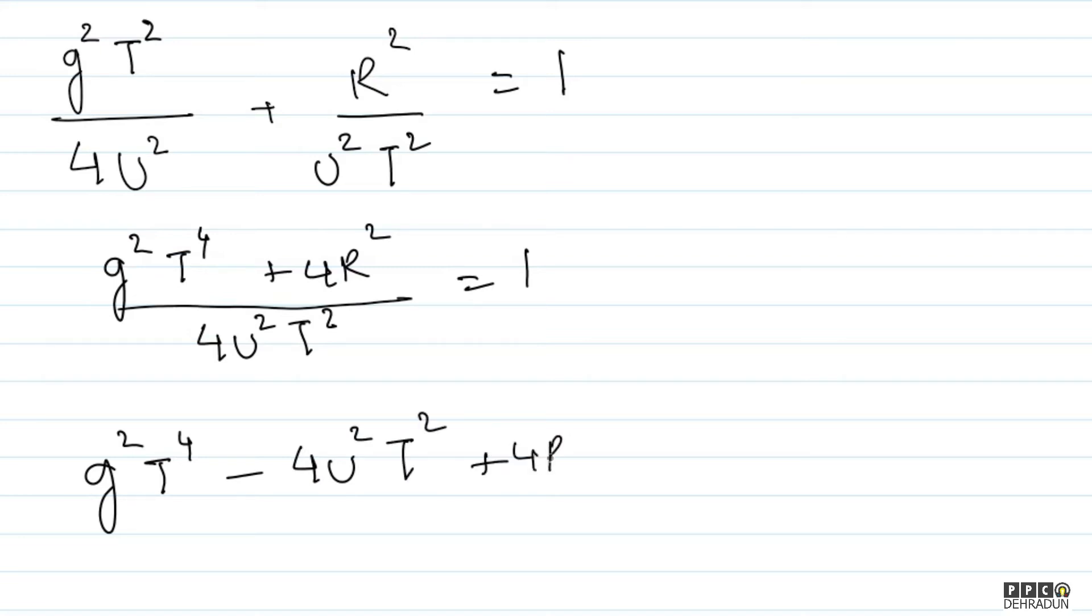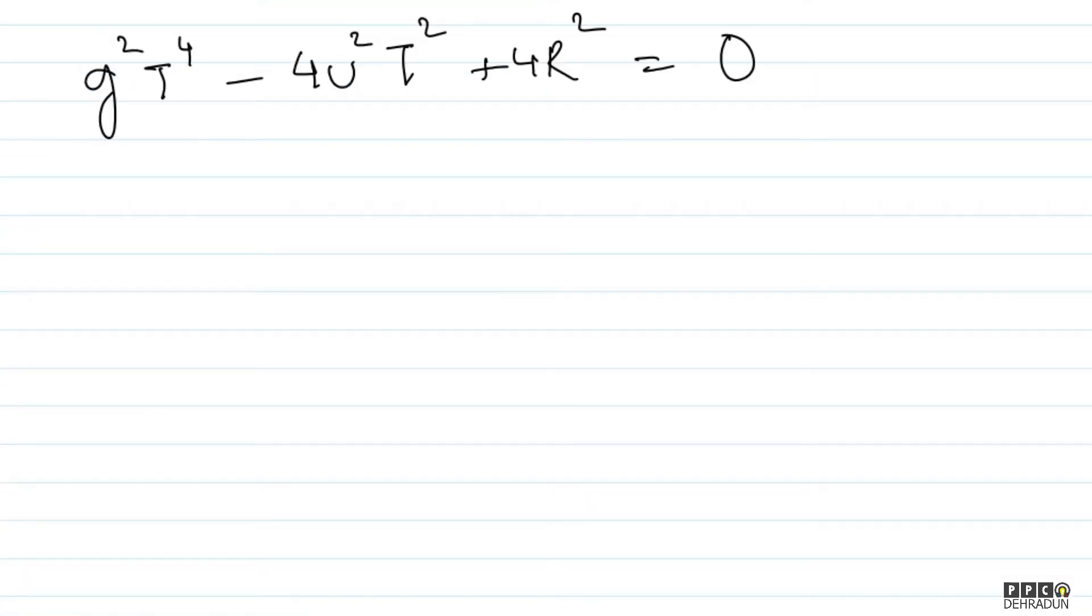So here you can see what is g square times t square whole squared minus 4u square into t square plus 4r square equal to 0. So here you can see a quadratic equation.